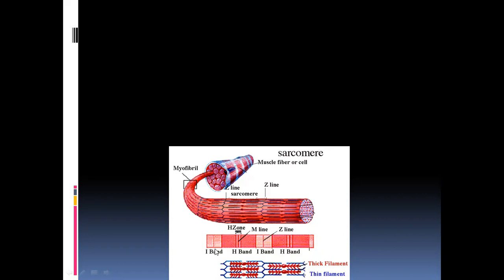This is the I band, and at the center of the I band it is bisected by a Z line. Within the A band, there is a lighter zone known as the H zone. From one Z line to the other Z line — this is a sarcomere. The A band is also known as the thick filament region, and the I band is known as the thin filament region.